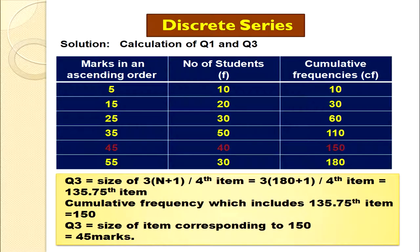For Q3: size of 3(n+1)/4 = 3(180+1)/4 = 135.75th item. Looking into the cumulative frequency, 135.75 falls in the row with CF = 150, corresponding to marks = 45. So Q3 = 45 marks. We have learned how to compute Q1 and Q3 in discrete series. Now let us discuss how to compute Q1 and Q3 in continuous series.